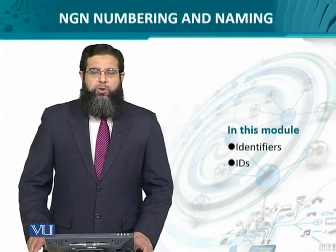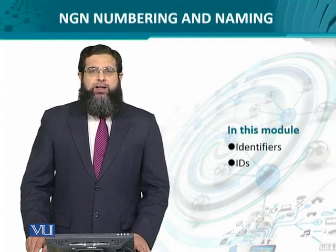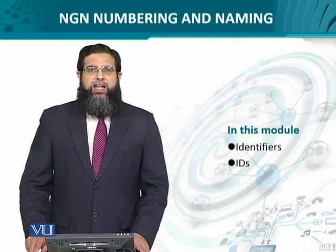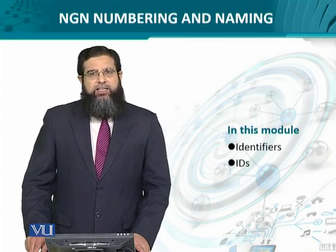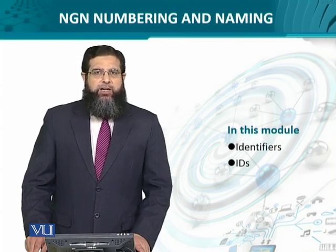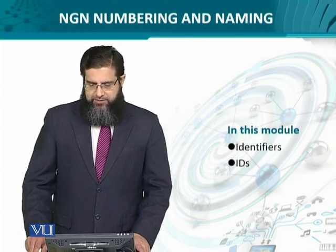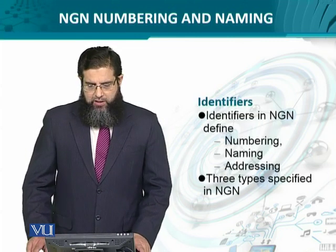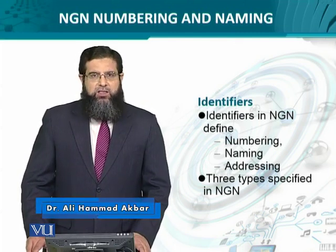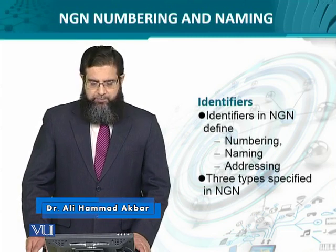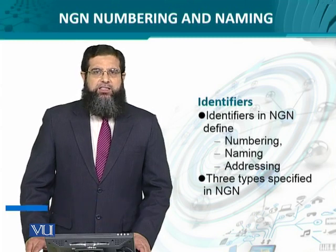In this module, we shall look at what are the different forms of identifiers which are used in NGN. Specifically, we look at the three types which are adopted in NGN to identify the objects and entities. The identifiers in NGN are defined as the numbering system, the naming system, and the addressing system.